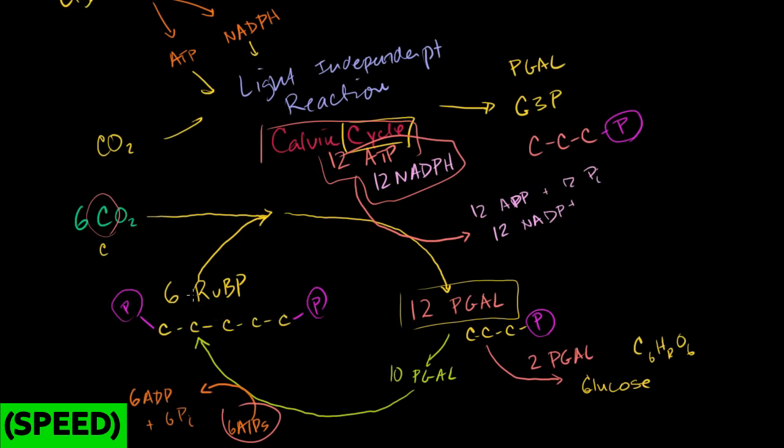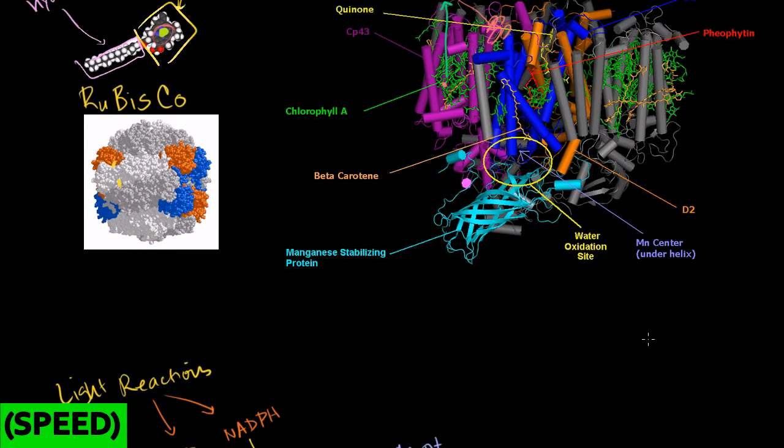And you might, you know, I told you over here that this RuBP, this is ribulose 1,5-biphosphate. This rubisco, this is short for ribulose 1,5-biphosphate carboxylase. I won't write it all out, you can look it up, but it's just telling you, look, it's an enzyme that's used to react carbon and ribulose 1,5-biphosphate.